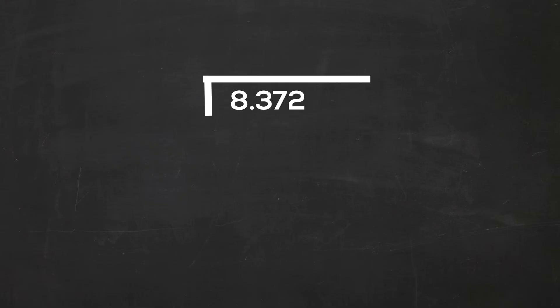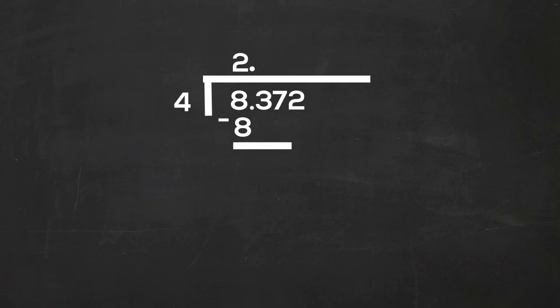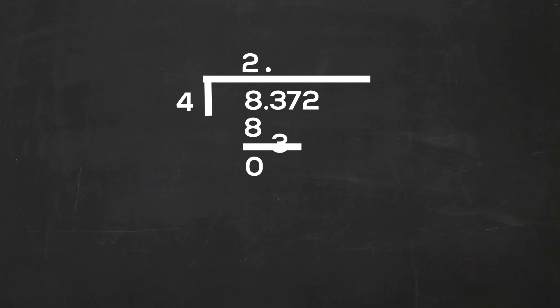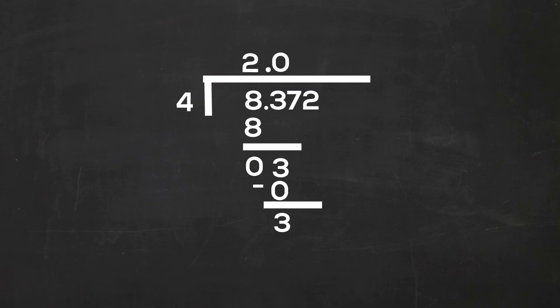Let's look at the second problem. We have 8.372 divided by 4. Let's move that decimal point up. 4 goes into 8 two times. 2 times 4 is 8. 8 minus 8 is 0. Let's bring down the 3. 4 will not go into 3, so I'm going to multiply 0 times 4, and that is 0. 3 minus 0 is 3. Bring down the 7.